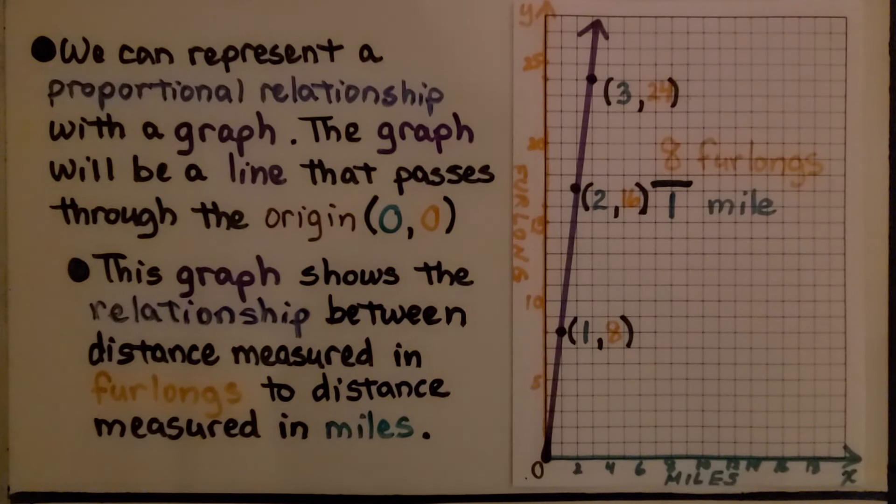We can represent a proportional relationship with a graph. The graph will be a line that passes through the origin, (0,0), so that would be 0 for the horizontal x and 0 for the vertical y.